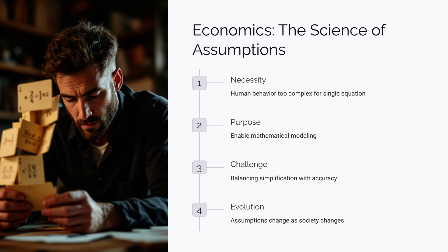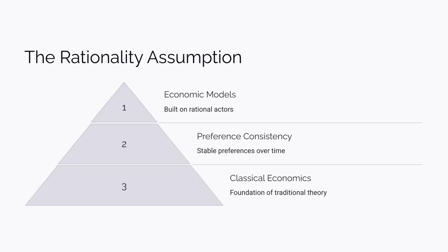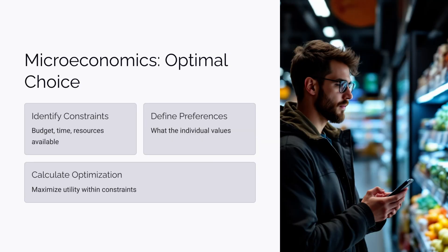Human behavior is too complex to capture in a single equation, so economic theories rely on assumptions. Without assumptions, it's impossible to model human behavior mathematically. In natural sciences, the laws of nature don't change much — once a law is established, it's unlikely to be wrong. But economics deals with humans, and human behavior can always change, which is why economics needs assumptions. One of the most common assumptions is that humans are rational, which is essential in classical economics.